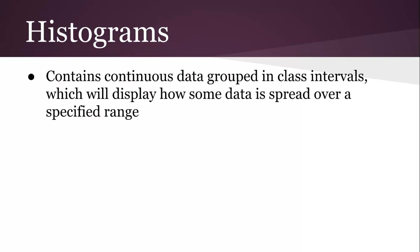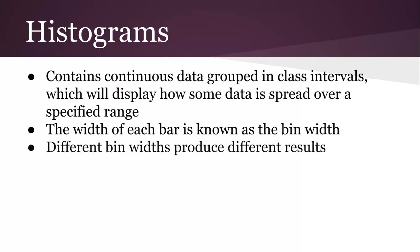A histogram contains continuous data grouped in class intervals which will display how some data is spread over a specified range. The width of each bar is known as the bin width. Google Docs calls it the bucket size. Different bin widths produce different results. We've seen in the organization of data for analysis that we can come up with different conclusions based on different graphs. We're actually going to see that again here.